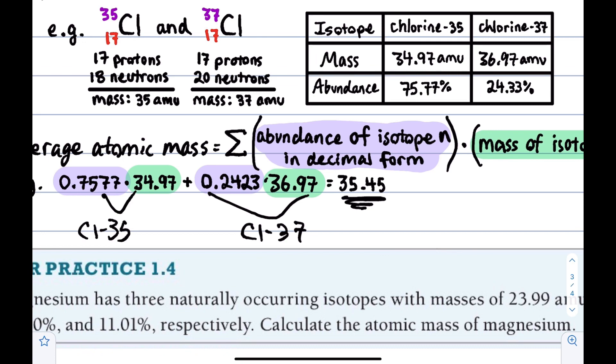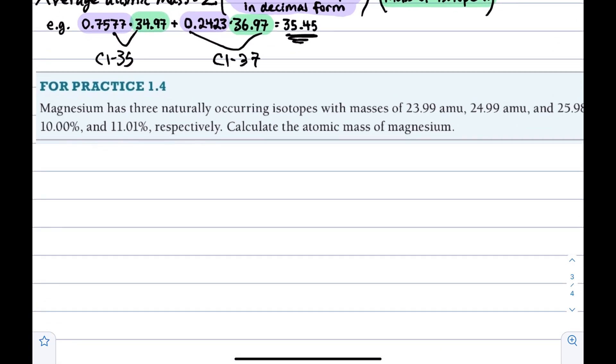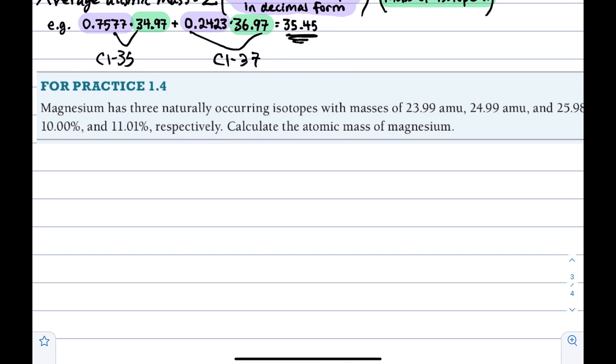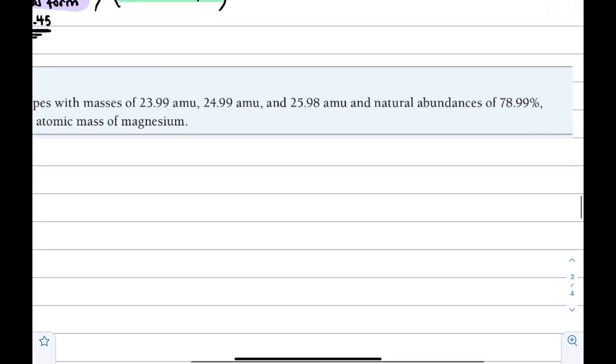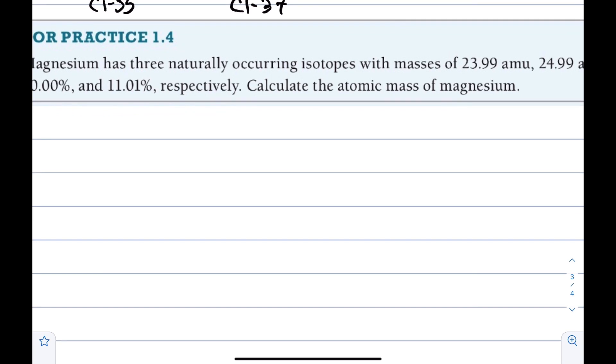And we can do another of these problems. I have an example exercise here for us. So magnesium has three naturally occurring isotopes with masses of this, this, and that, and natural abundances of that, that, and the other thing respectively, which means you match 1, 2, and 3 with A, B, and C, 1A, 2B, 3C, respectively, and then calculate the atomic mass of magnesium. So this is an example of one of those homework problems where you could check with your periodic table because magnesium is real. It will not be like that on the test. So we can take our masses.